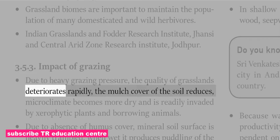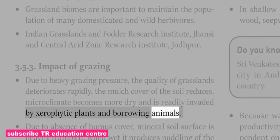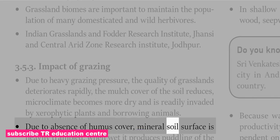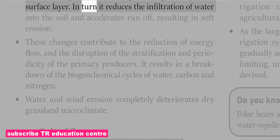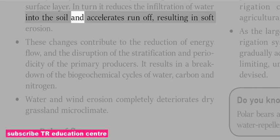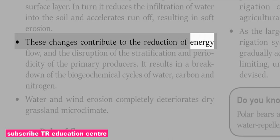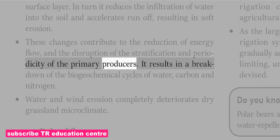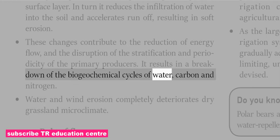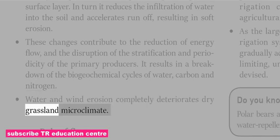Due to heavy grazing pressure, the quality of grasslands deteriorates rapidly — the mulch cover of the soil reduces, microclimate becomes more dry, and the area is readily invaded by xerophytic plants and burrowing animals. Absence of humus cover leads to heavy trampling of mineral soil, which produces puddling of the surface layer, reducing infiltration of water and accelerating run-off, resulting in soil erosion. These changes contribute to the reduction of energy flow, disruption of stratification and periodicity of primary producers, and breakdown of biogeochemical cycles of water, carbon and nitrogen.